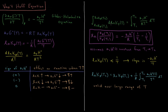The left-hand integral gives ln Kp(T2) − ln Kp(T1), which equals ln(Kp(T2)/Kp(T1)). The integral of 1/T² is −1/T, so the right-hand side gives −(ΔH°/R) times (1/T2 − 1/T1).